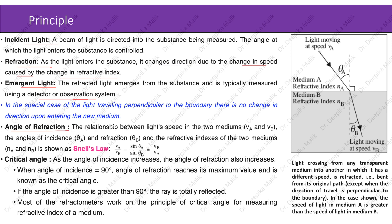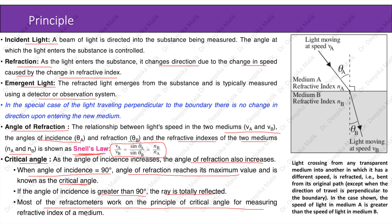The relationship between light speed in the two mediums Va and Vb, the angles of incidence theta-a and refraction theta-b, and the refractive indexes of the two mediums na and nb, can be represented by Snell's law: Va/Vb = sin(theta-a)/sin(theta-b) = nb/na. Critical angle: as the angle of incidence increases, the angle of refraction also increases. When the angle of incidence equals 90 degrees, the angle of refraction reaches its maximum value, known as the critical angle. If the angle of incidence is greater than 90 degrees, the ray is totally reflected. Most refractometers work on the principle of critical angle for measuring the refractive index of a medium.